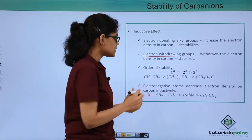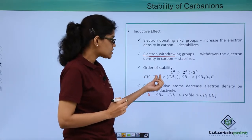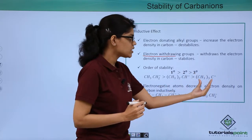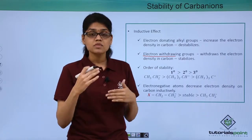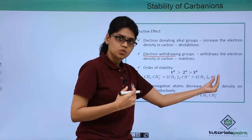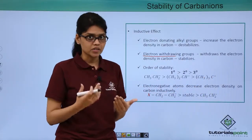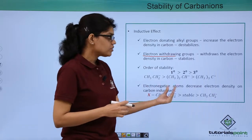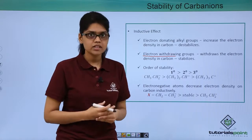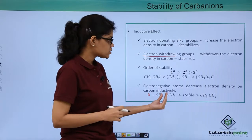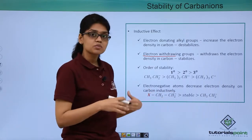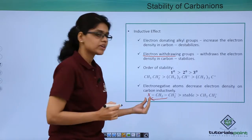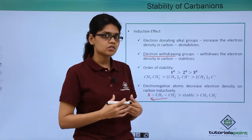A primary carbanion — carbon with a negative charge attached to one carbon — has higher stability compared to a secondary carbanion, which is more stable than a tertiary carbanion. In a tertiary carbanion, three alkyl methyl groups, all electron-donating, donate electron density toward the carbanion, making the electron density on the small carbon very high, which is unfavorable. Similarly, electronegative atoms decrease electron density on the carbon inductively and stabilize the system. For example, X–CH2–CH2⁻ where X is an electronegative atom is much more stable than the species without such an atom, due to the electron-withdrawing effect of halogens.